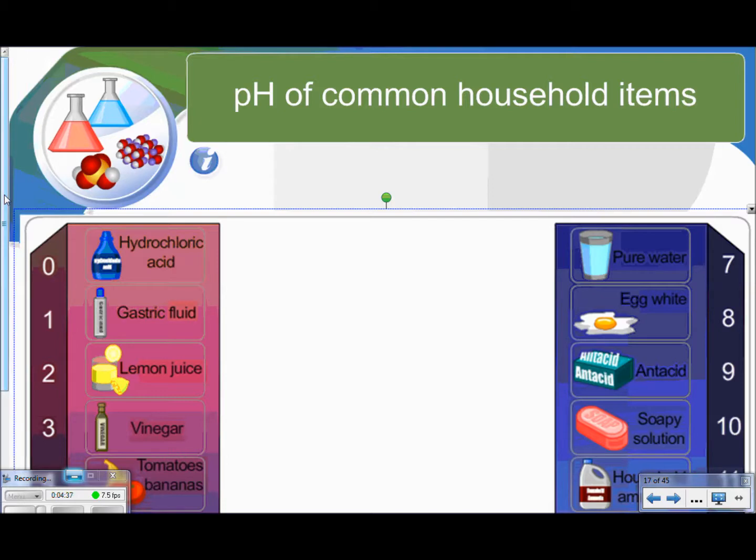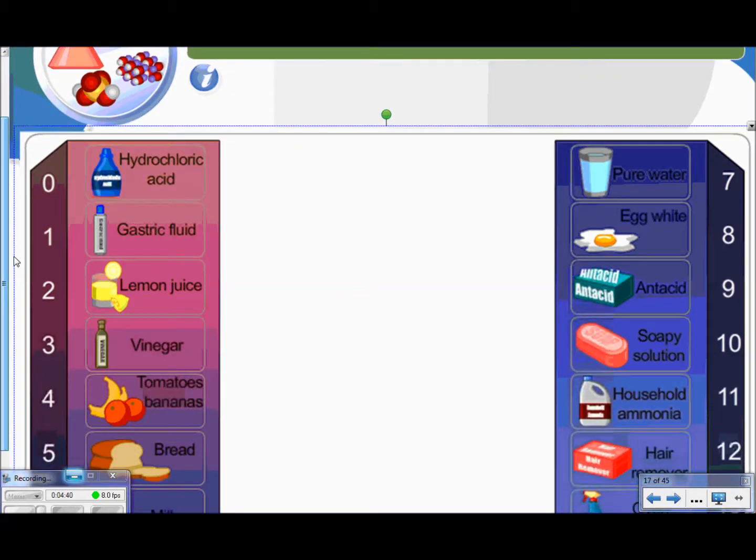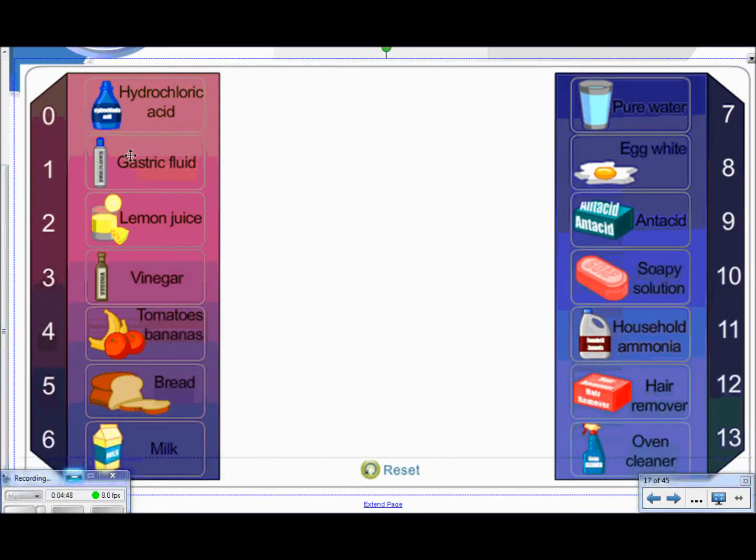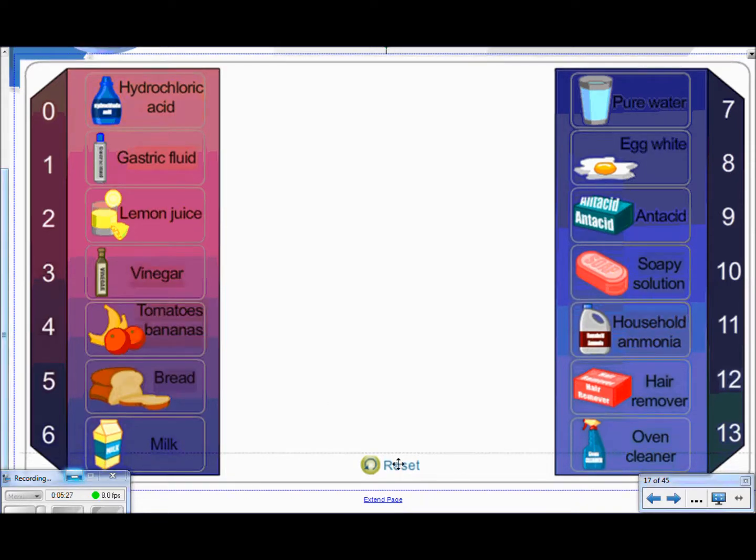So here I have the pH of some common household items. Or things that at least you're familiar with. If you look here, extremely acidic, we've got hydrochloric acid with a pH of about 0. That's really, really acidic. Your gastric fluid, which is really necessary in order to digest food. Then the lemon juice, vinegar, tomatoes and bananas, bread, milk. Milk is in the acidic region. A lot of kids are confused by this. They think milk is a base. It is not. It is an acid. Pure water, 7. When you get into bases, we're talking about eggs, antacids, soaps, ammonia, hair remover, oven cleaner. All of these things are bases.